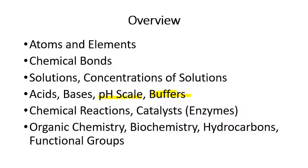A buffer is something that absorbs attempts to change things. If you have a solution at pH seven and you start adding an acid, the pH should go down. But if you've added a buffer to that solution, you'll have to add a lot more acid than you otherwise would to get the pH to go down — the buffer resists the change in pH. If the solution is not buffered, a little bit of acid causes the pH to immediately drop. If buffered, you have to add a lot of acid before the pH drops. The reverse is also true: adding a base to a buffered solution will be resisted for quite a while.